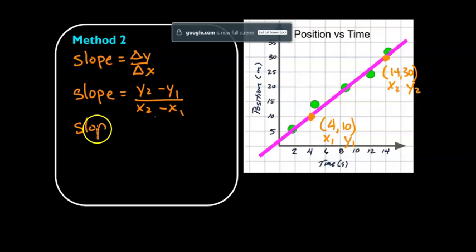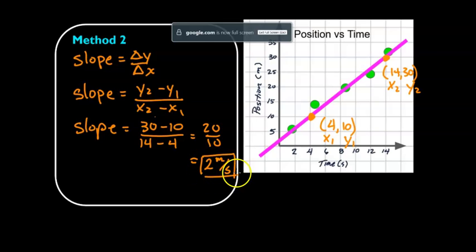So now we're just going to plug in our numbers. So y2 is 30 minus y1 is 10 divided by x2 is 14 minus x1 is 4. So 30 minus 10 is 20. 14 minus 4 is 10. And 20 divided by 10 is 2. And our units is going to be whatever the unit on the y-axis is, the vertical axis, divided by the number on the x-axis. So once again, we get 2 meters per second.